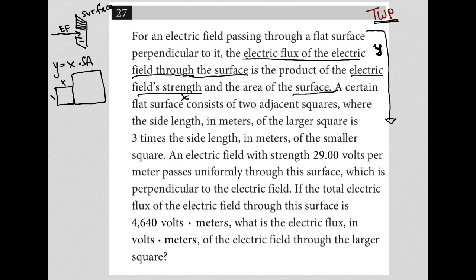So if X, the electric field strength, is 29, it passes uniformly through this surface. Which surface? Well, the surface made up of these two squares. So I can find the surface area of these two squares because the area of this small square is just going to be A squared.